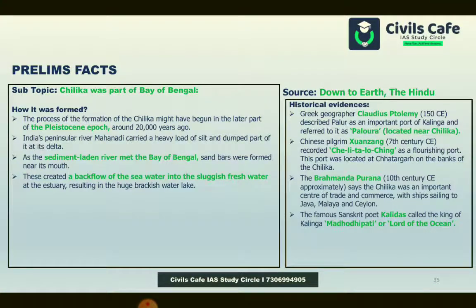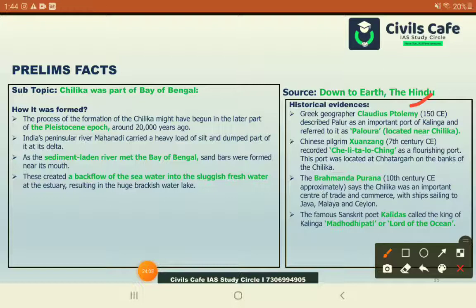Chilka Lake is both a Ramsar site and tentatively placed on UNESCO's World Heritage site list. Its significance is mentioned from early centuries to later periods. Ptolemy mentioned Palur, an important port of Kalinga. Huen Tsang has mentioned Chilka. Brahmanda Purana also mentions Chilka as having significant trade with foreign lands. Kalidasa called the king of Kalinga — where Chilka is located — the lord of the ocean.